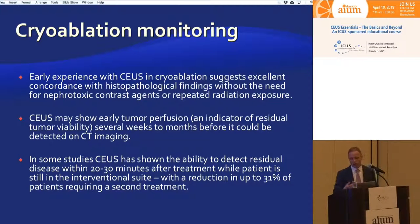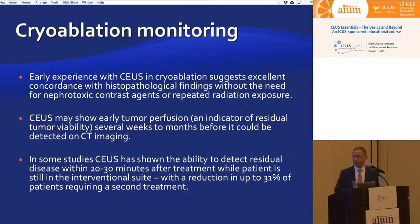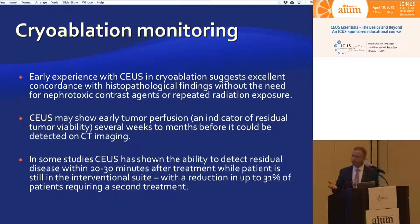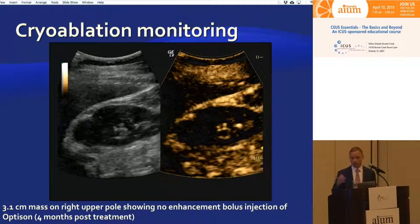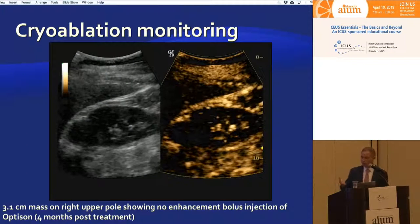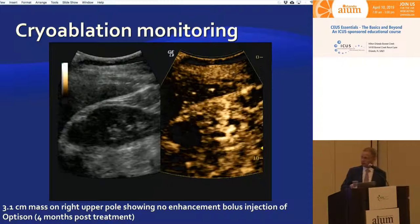Cryoablation monitoring — we do this quite often for clinical patients. It started as a research project, but our interventional radiologists now send us all those patients because a large proportion have poor renal function. They undergo cryoablation removing a quarter of the kidney with the ablation zone, further decreasing renal function. Urologists really want to use contrast-enhanced ultrasound instead of CT and MRI for monitoring, because these patients enroll in lifelong surveillance.